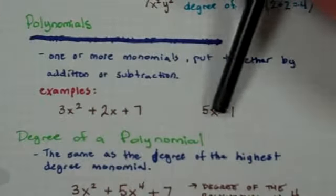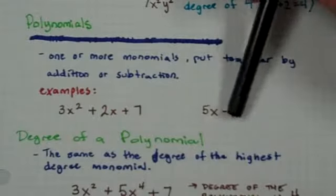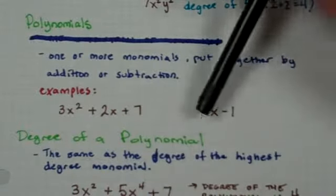And then we have 5x minus 1. Two monomials put together by addition or subtraction. They're being subtracted. So that is a polynomial.